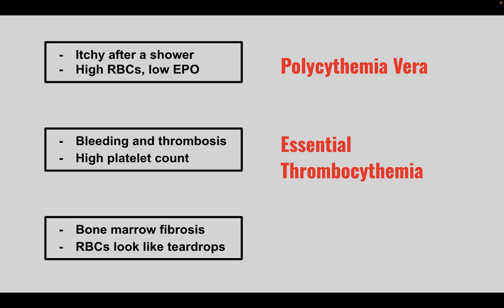Next is a patient that presents with bone marrow fibrosis and red blood cells that look like tear drops. This is myelofibrosis. The fibrosis of the bone marrow can lead to pancytopenia.